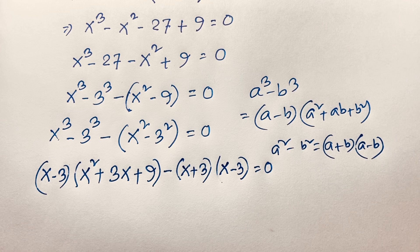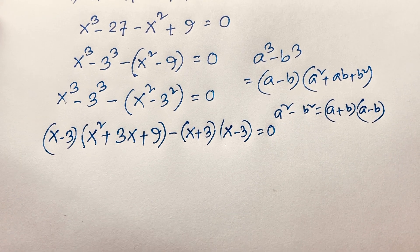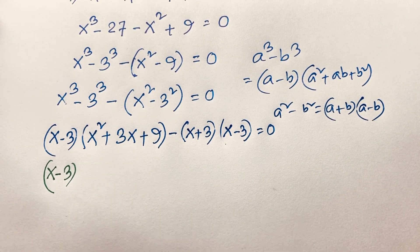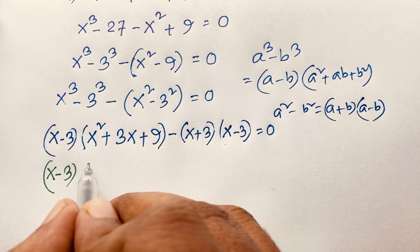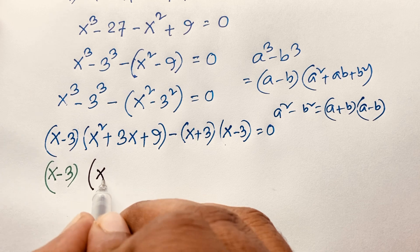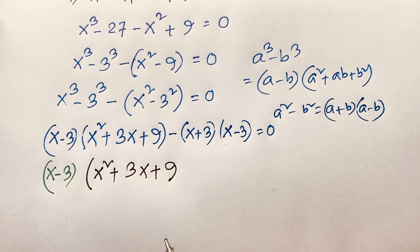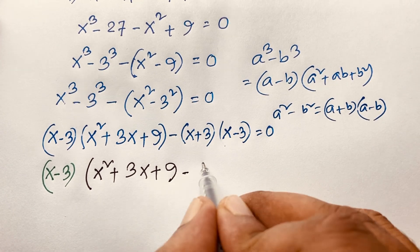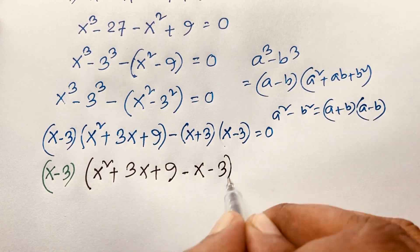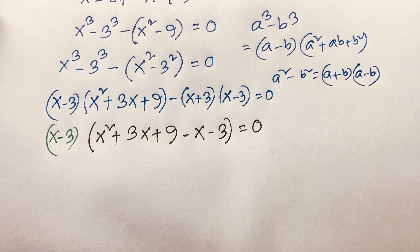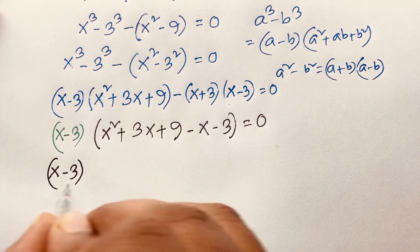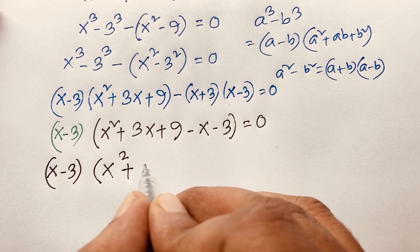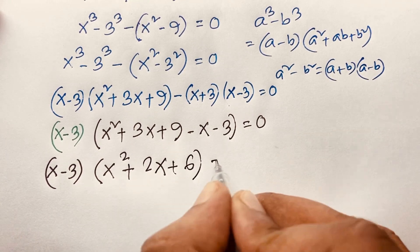Now in this expression, you can see that (x minus 3) is a common factor. Taking (x minus 3) as common: dividing gives x squared plus 3x plus 9, and dividing the second group gives (x plus 3), but with the negative sign it becomes negative x minus 3. So we have (x minus 3) times (x squared plus 3x minus x plus 9 minus 3), which simplifies to (x minus 3)(x squared plus 2x + 6) is equal to 0.